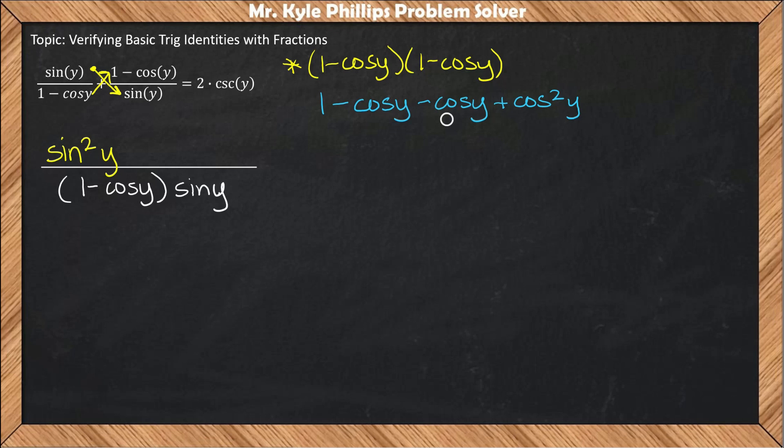I'll combine these two middle terms when writing my numerator. So here I'll have plus 1 minus 2 cosine y plus cosine squared y.